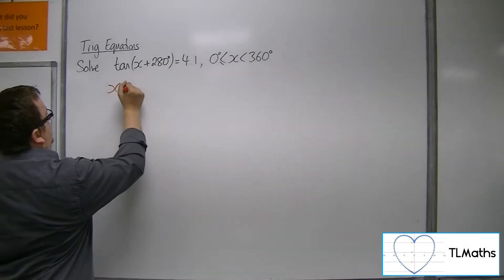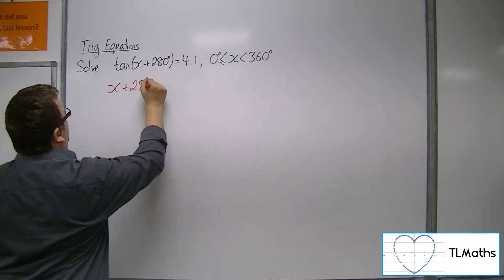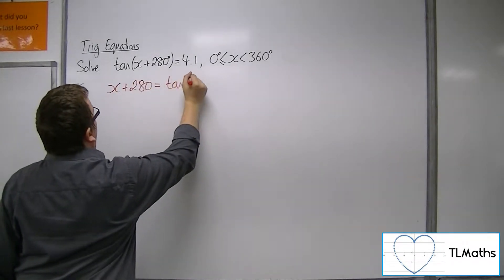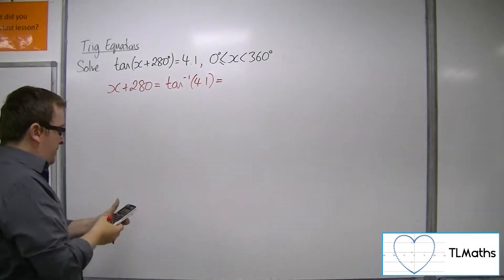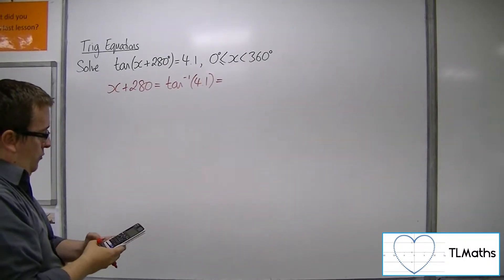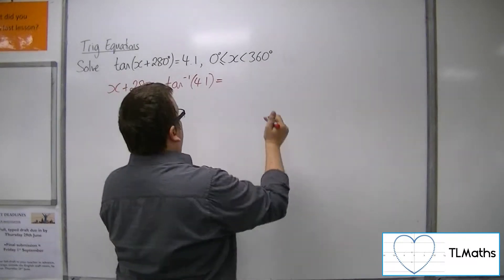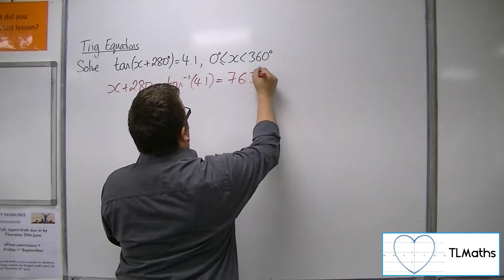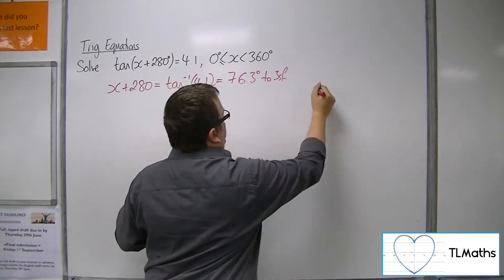So, first of all, inverse tan both sides. OK, so inverse tan 4.1 is 76.3 degrees to 3 sig fig.